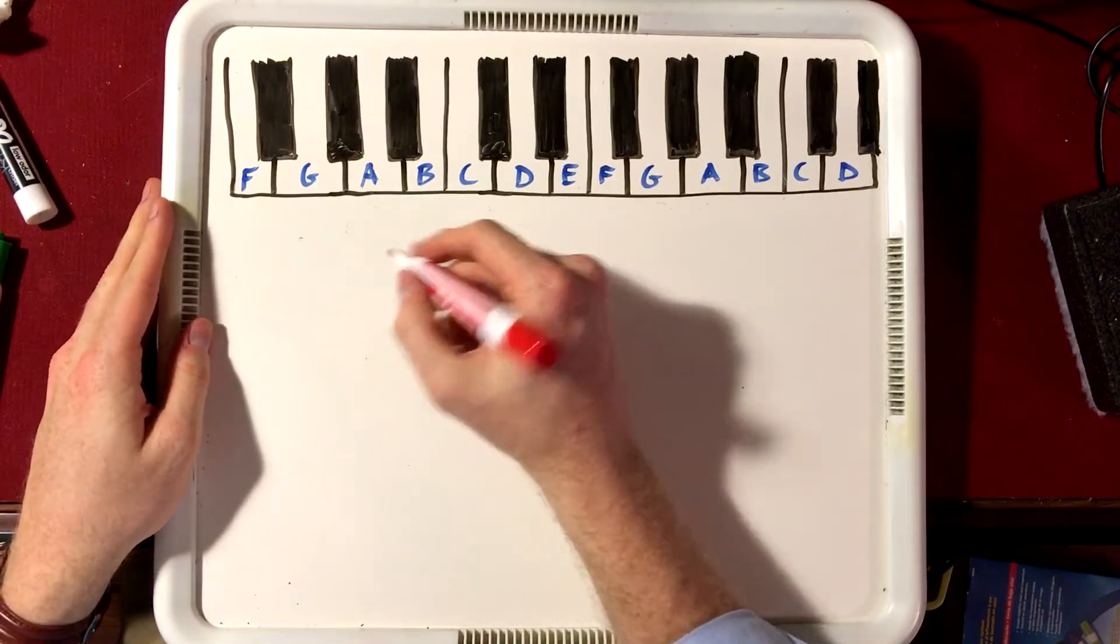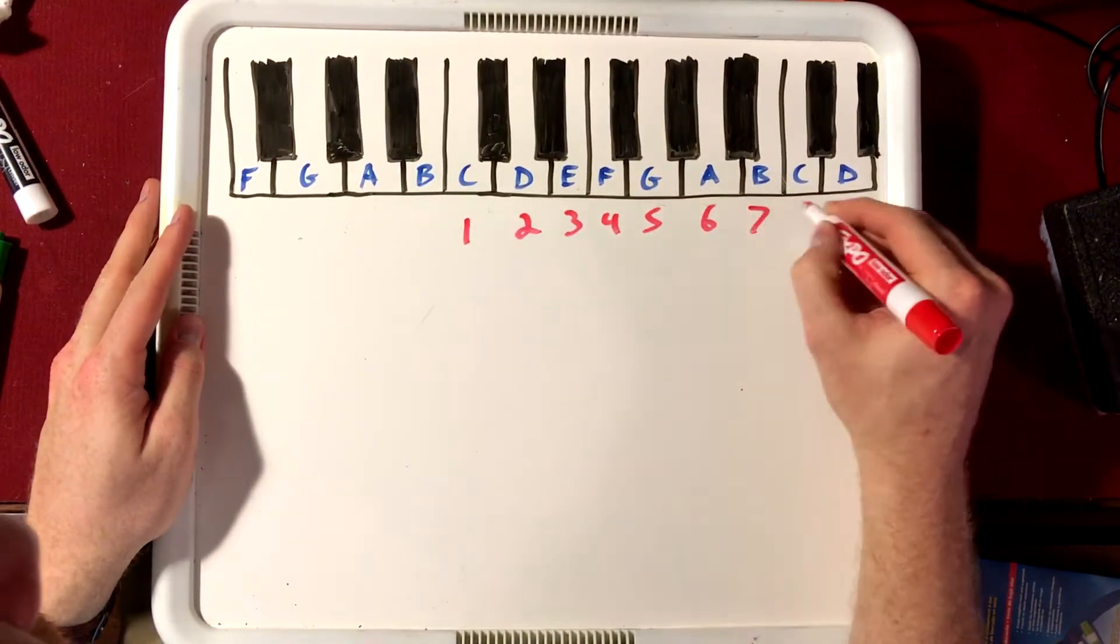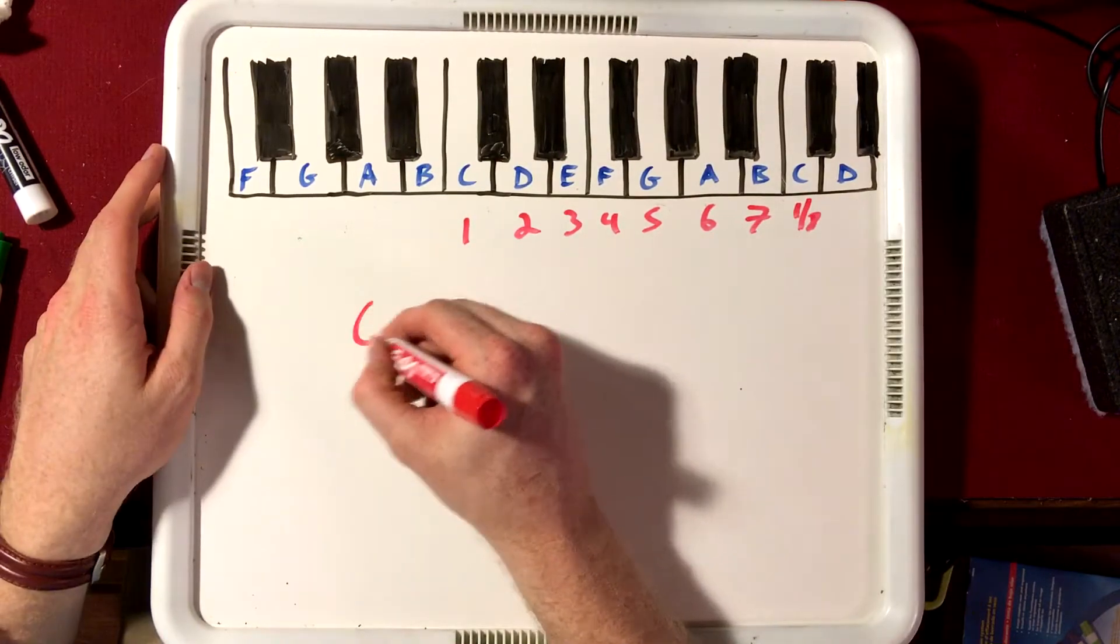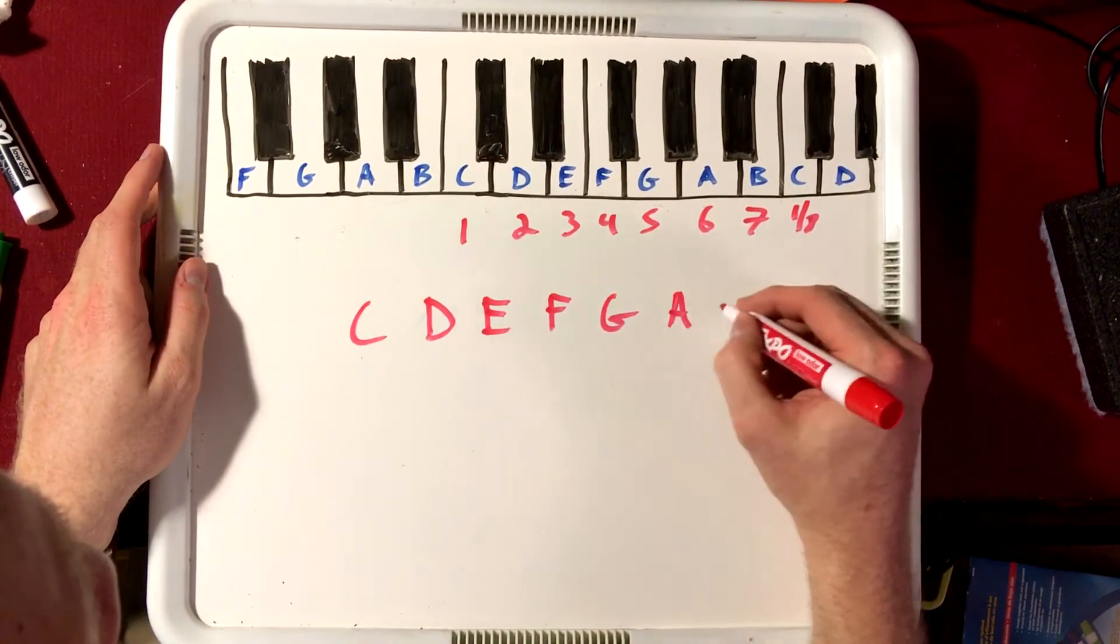Let's look at the C major scale. We have one, two, three, four, five, six, seven, and then our one again. I'm going to write them out: C, D, E, F, G, A, B, C again.